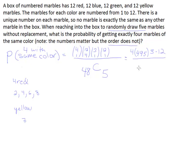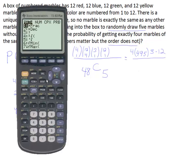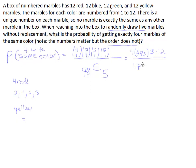And on the bottom, I need to do 48 choose five. And when I do that, I get this huge number, 1,712,304. So 1,712,304.